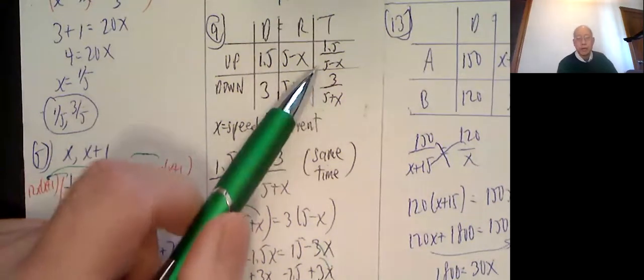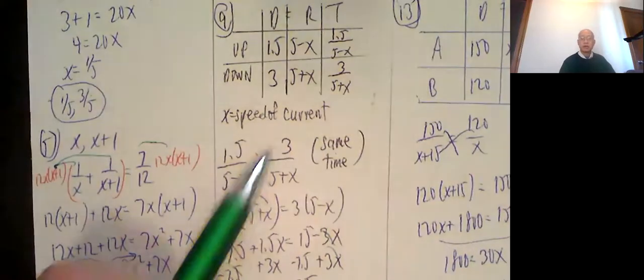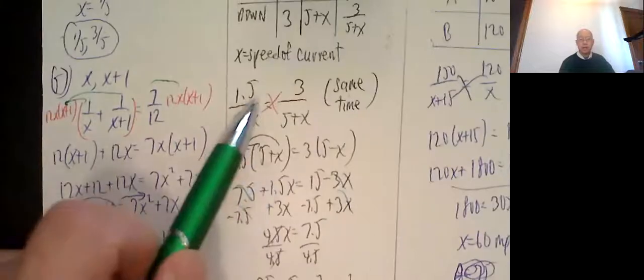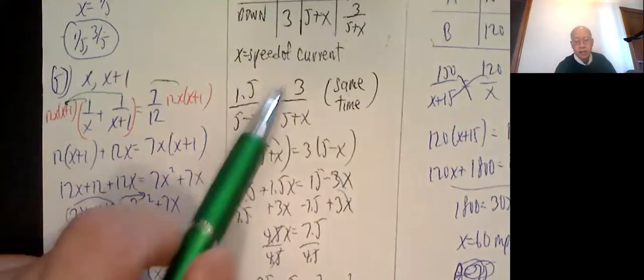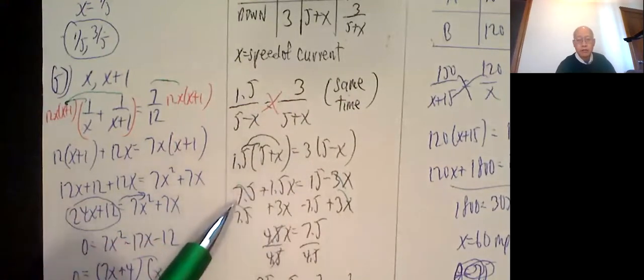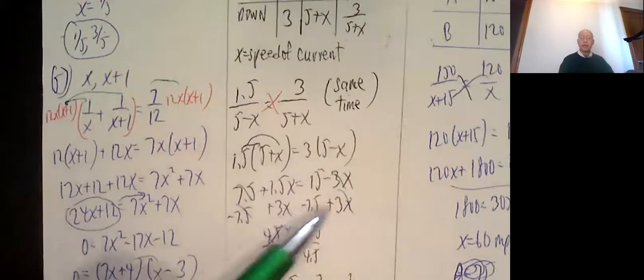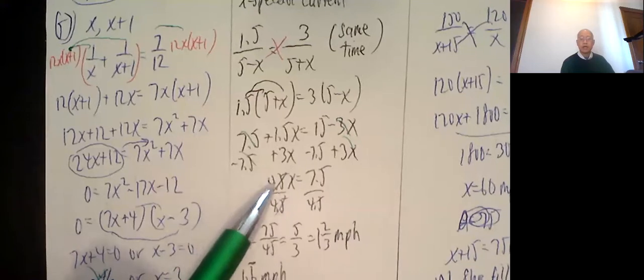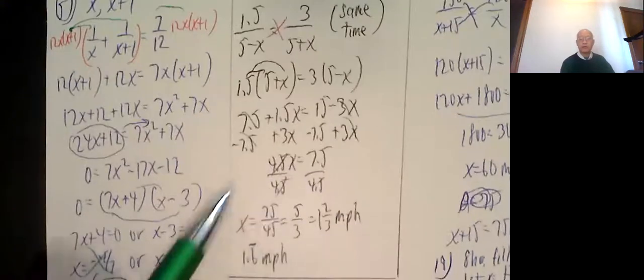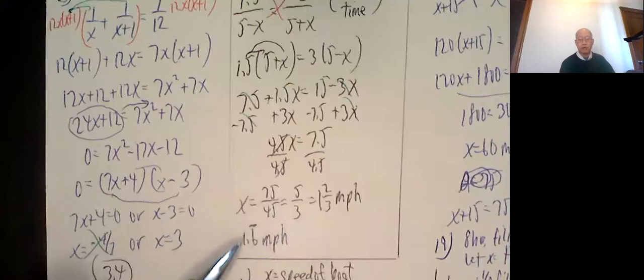Now, it's set the same time upstream and downstream, so I set these two equal to each other. 1.5 over 5 minus x equals 3 over 5 plus x because it's set the same time. I do the cross-multiply route. So that times that, 1.5 times 5 plus x is equal to that times that, 3 times 5 minus x. Distribute 7.5 plus 1.5x equals 15 minus 3x. Add 3x to both sides, subtract 7.5 on both sides. So we get 4.5x equals 7.5, divided by 4.5. x is equal to 75 over 45, which reduces to 1 and 2 thirds miles per hour, or 1.6 repeating miles per hour is the speed of the current.